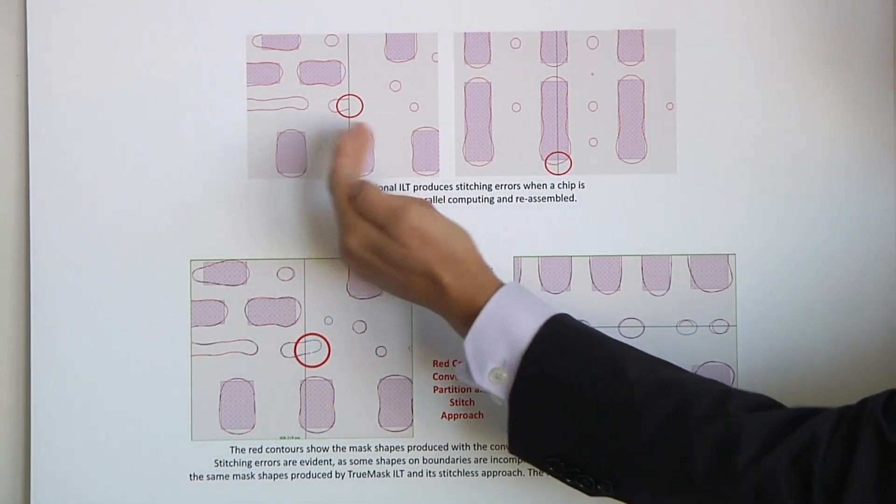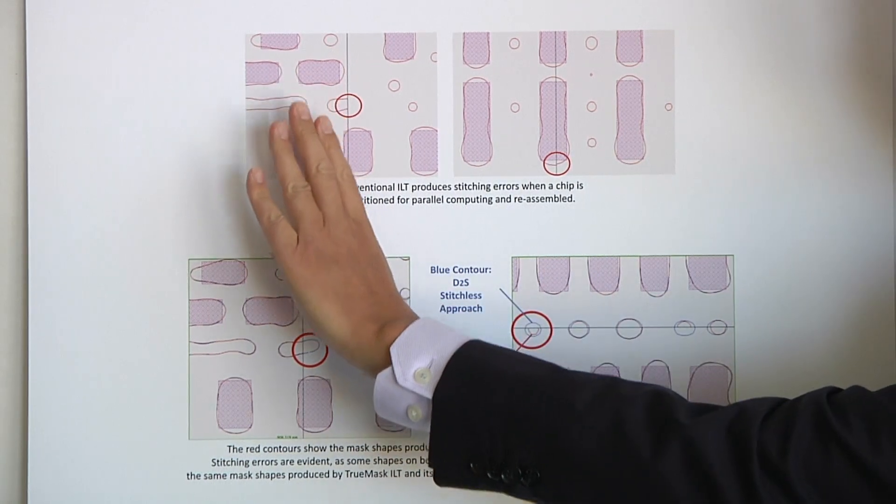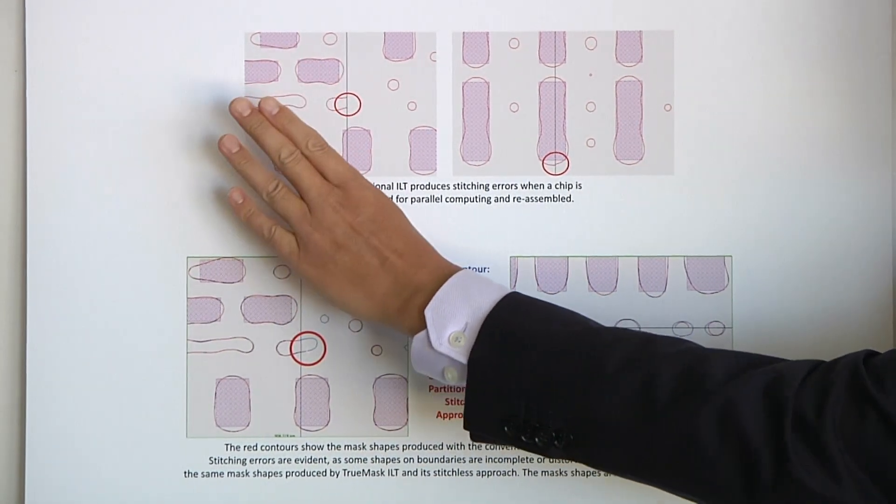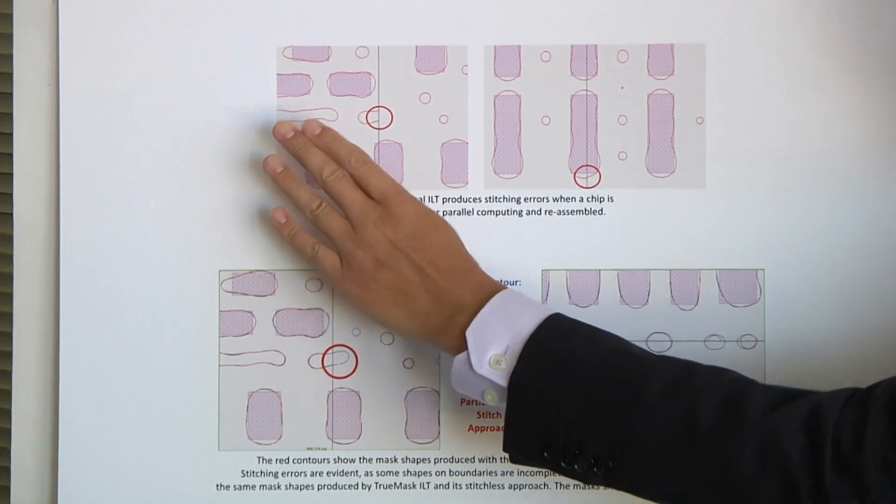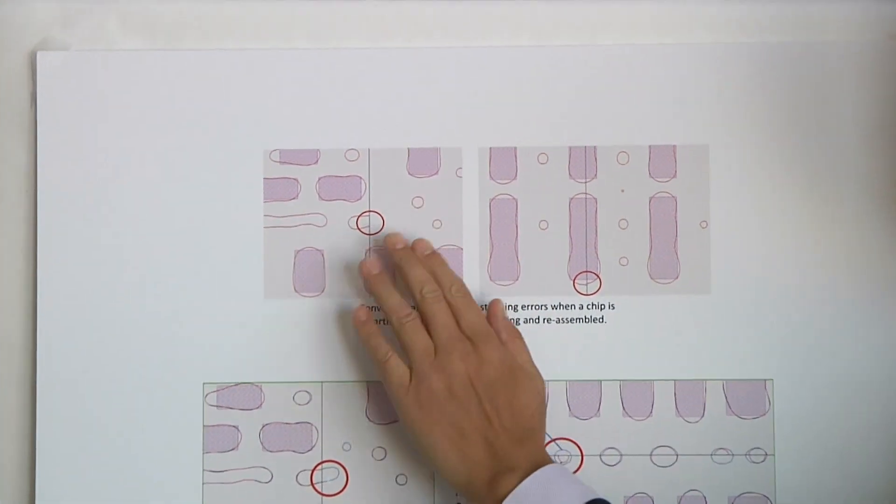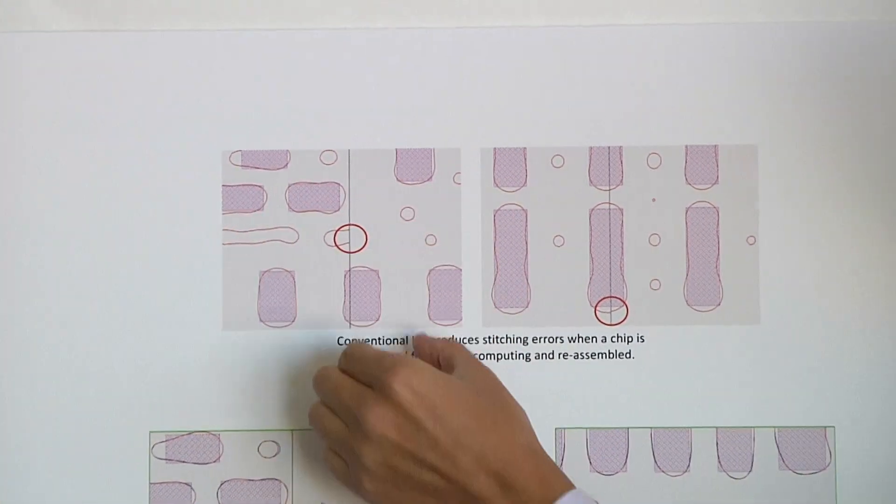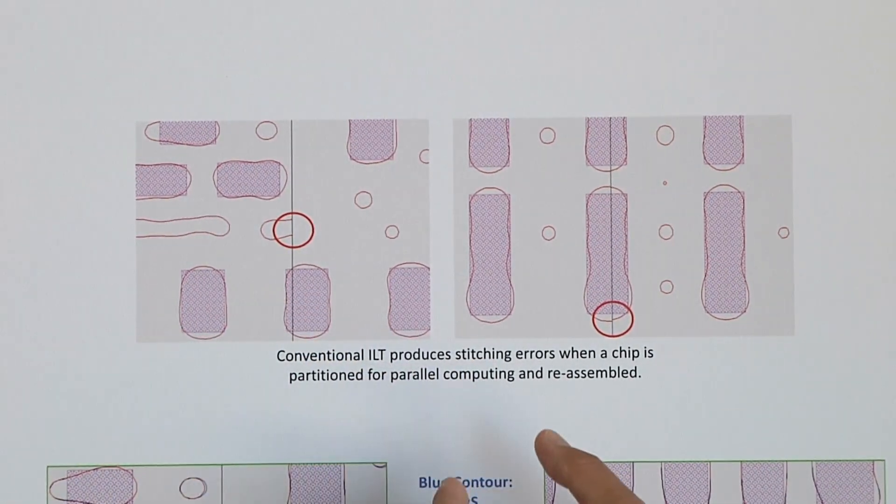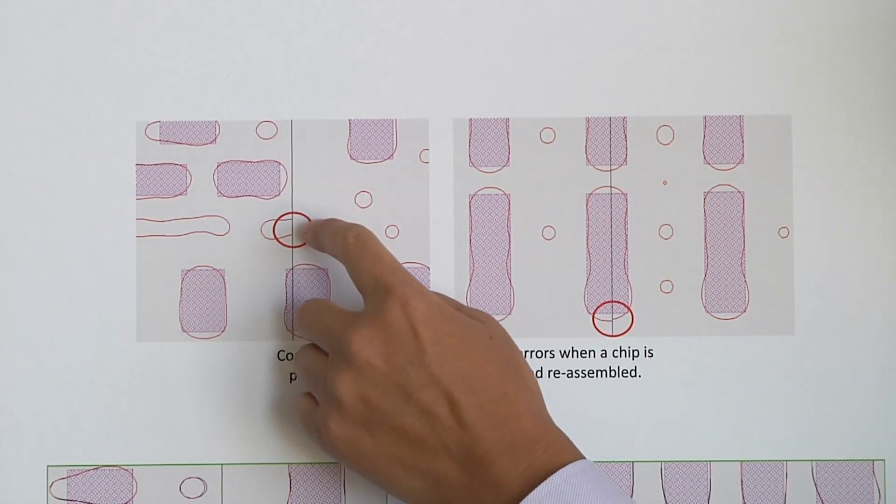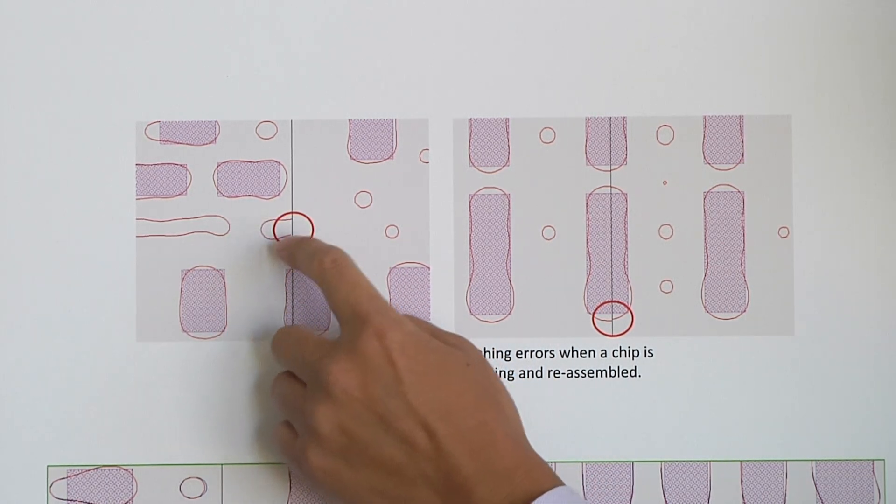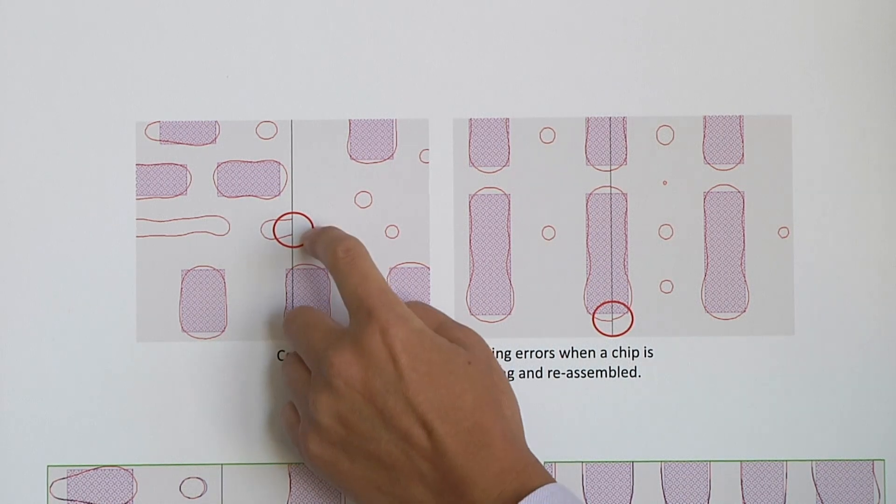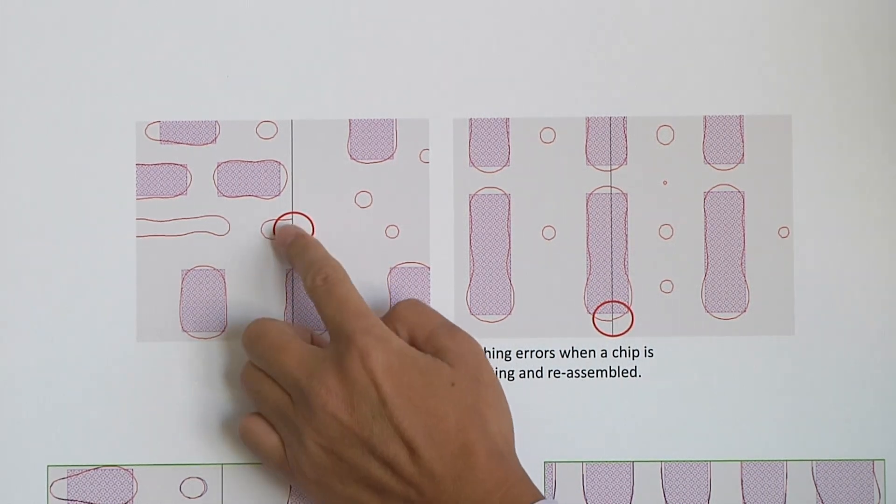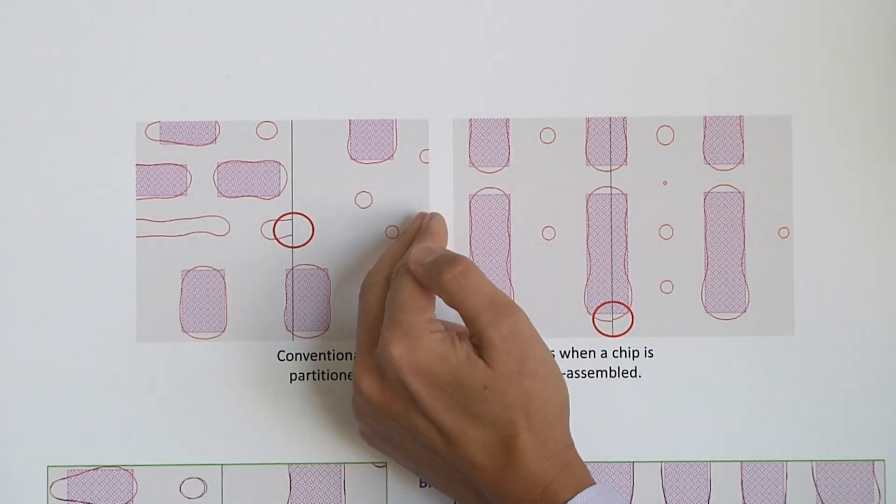And this black line in the middle is actually the boundary between the left partition and the right partition. As I just said, in conventional ILT, each partition is actually processed separately. At the end, you put them together. Although they do have some buffer, but still, they were processed separately. That's why, when you look at the solution generated from the left partition, you see this assist feature in the middle, which is supposed to get the other piece from the right partition as well.